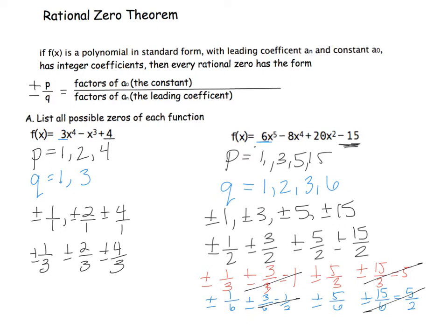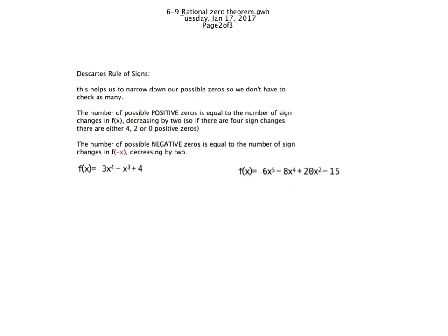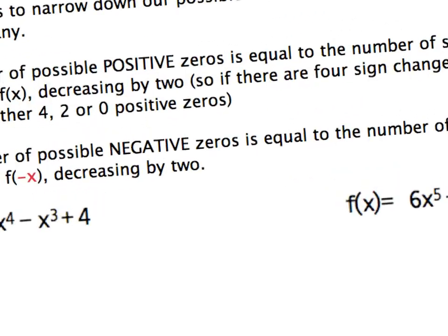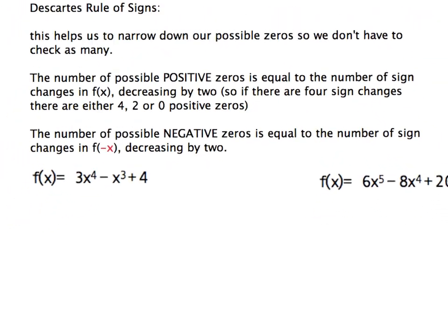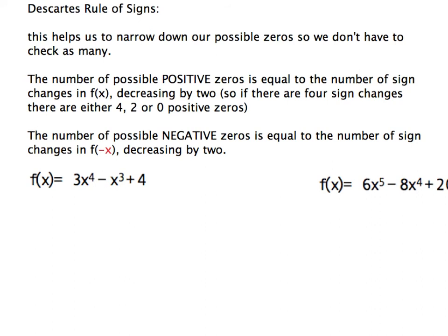So those are the lists of all the possible zeros for each of these polynomials. To check which ones actually work, we can use synthetic substitution — when we get a remainder of zero, it's actually one of the zeros. But in some cases this is a lot to check, so we can narrow it down by looking at Descartes' rule of signs.